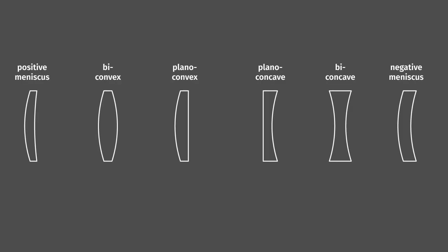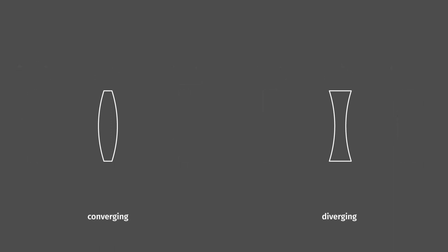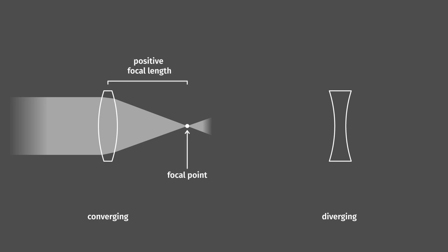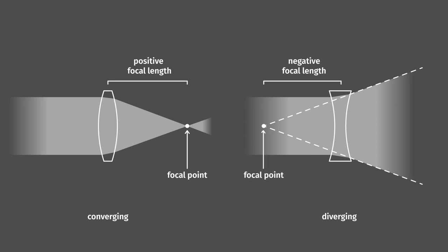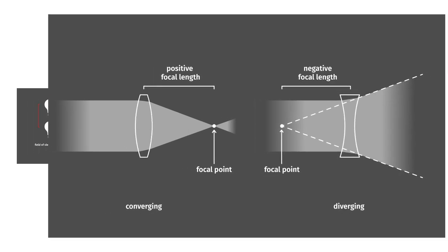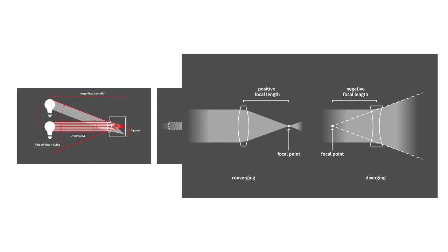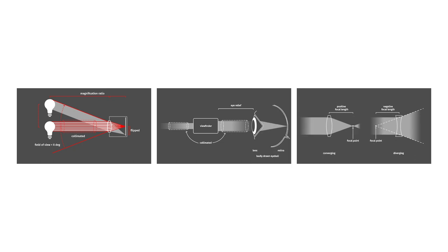Basically, there are a lot of lens shapes, but only two types are important for us. Converging lenses collect light and focus it on a point that lies in the same direction as light travels. So the focal length is positive. Diverging lenses let light diverge, so it seems to originate from a virtual focal point on the back side of the lens. They have a negative focal length. So, that's the boring prerequisites. Now the fun part. Let's look at the evolution of viewfinders.